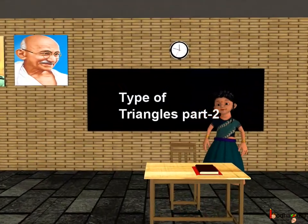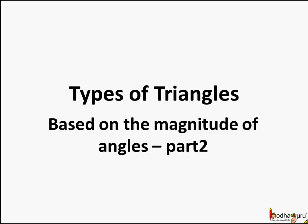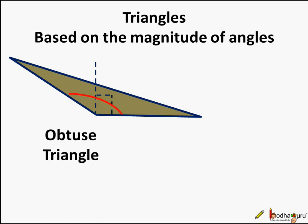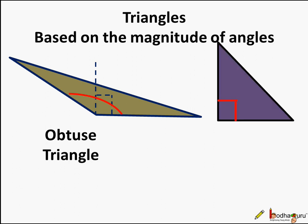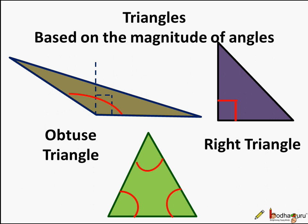Good morning children. Now you know the three types of triangles based on the magnitude of angles: the obtuse triangle, where one angle is obtuse; the right triangle, where one angle is a right angle; and the acute triangle, where all angles are less than 90 degrees.